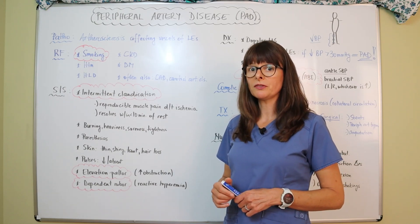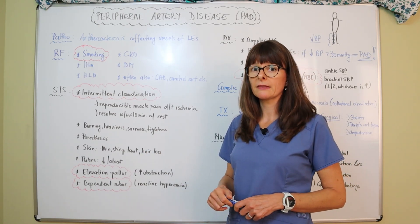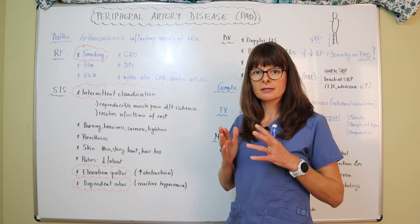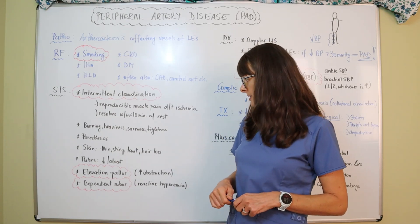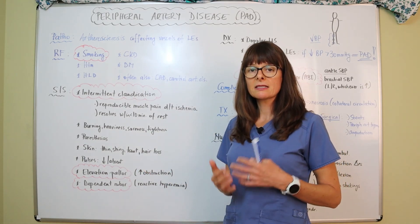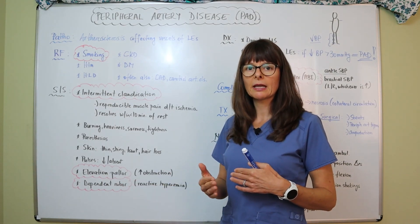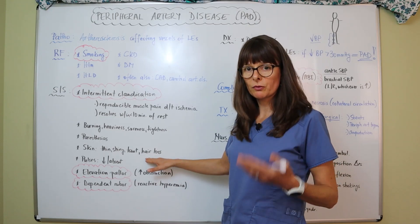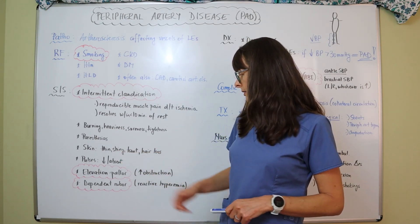Signs and symptoms patients often report include a burning heaviness, soreness, or tightness in the lower extremities, particularly in the calves. They might also complain of paresthesia — numbness and tingling — because impaired blood flow can affect the nerves. Their skin might look thin, shiny, and taut, and there might be some hair loss. This happens gradually over time, as hair growth and skin blood flow don't take priority, causing the skin to become thin and shiny and hair to be lost.